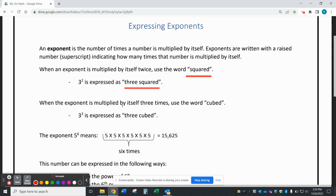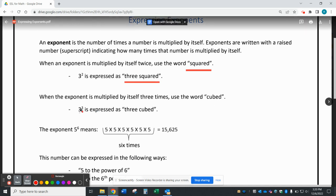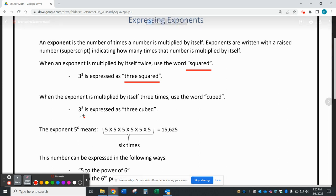When an exponent is multiplied by itself 3 times, and the exponent is 3, we express that as cubed. So this number is expressed as 3 cubed.